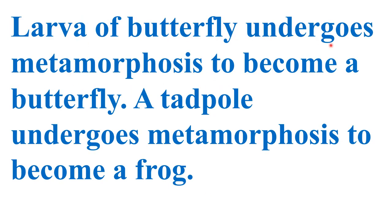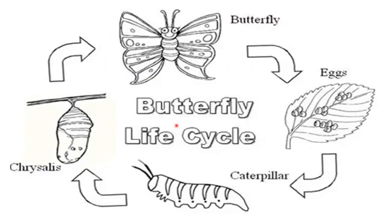The larva of a butterfly undergoes metamorphosis to become a butterfly. A tadpole undergoes metamorphosis to become an adult frog. The butterfly life cycle shows: eggs → caterpillar → chrysalis → adult butterfly. These are all drastic changes, which is why it is called metamorphosis.